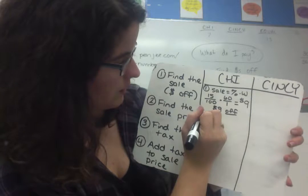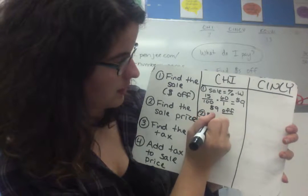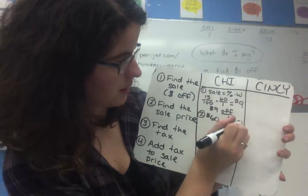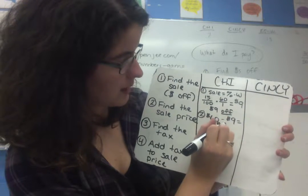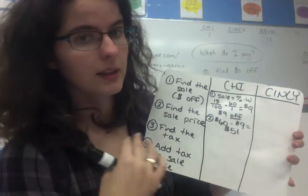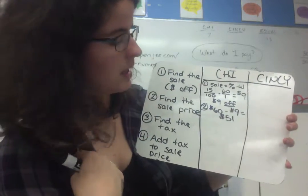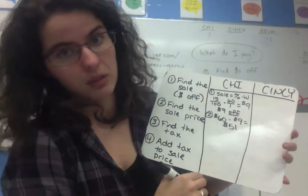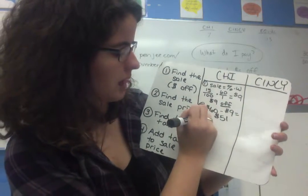In this case, $9 is going to be what we are taking off of the original price. So now we can find the sale price. If our original was 60, and we're taking away $9, our new price that is going to be what I expect to pay when I go to the cash register is $51. Pretty good deal. I saved almost $10, that's solid.